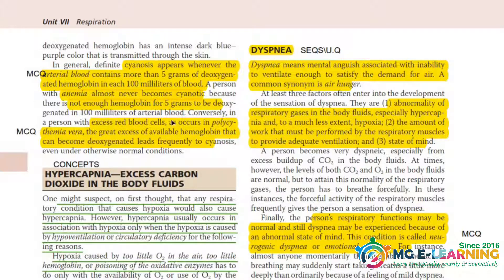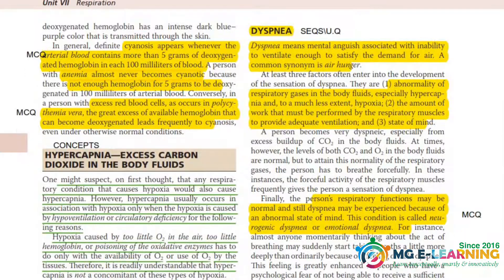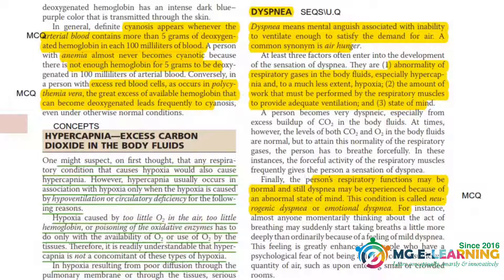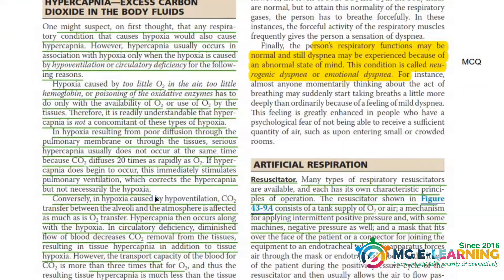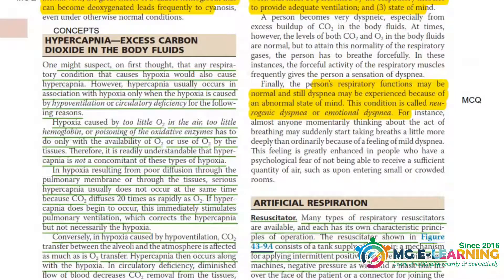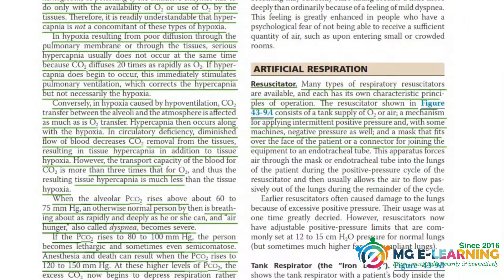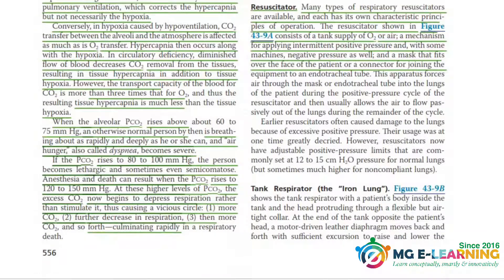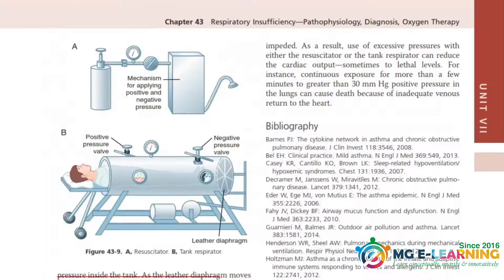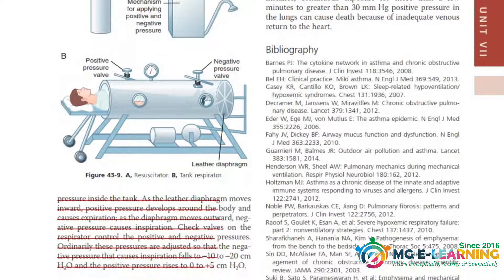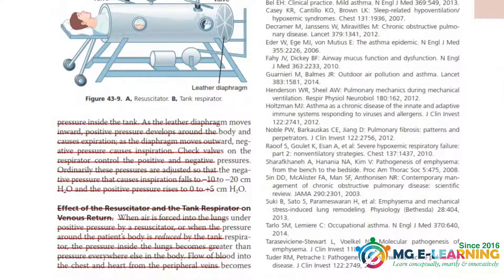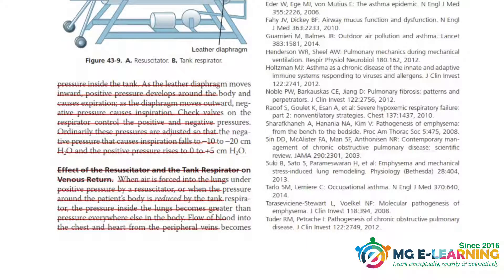Hypercapnia is a conceptually important topic — you have to build the concept of hypercapnia — and it is also important for MCQ points. The last topic of this chapter is artificial respiration. You can neglect this topic; just read it if you want, as it is not a very important topic.